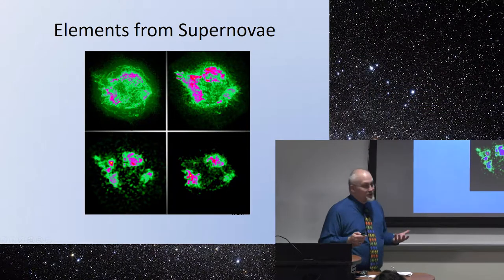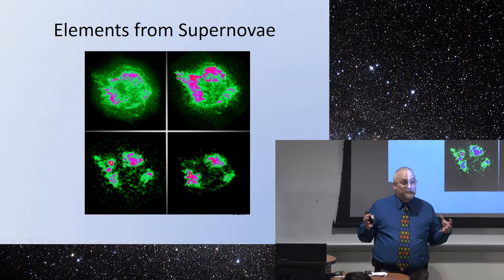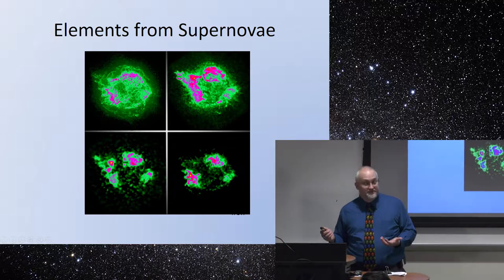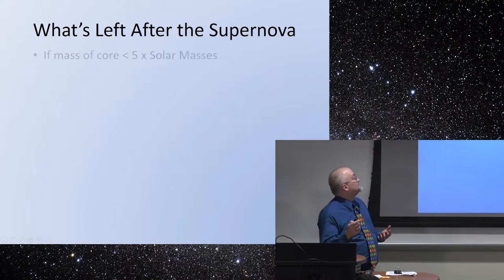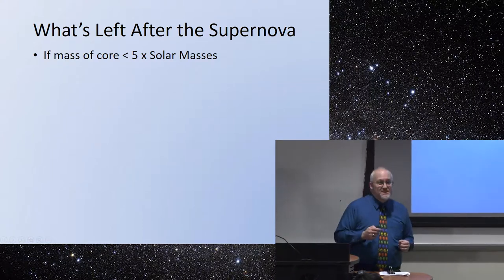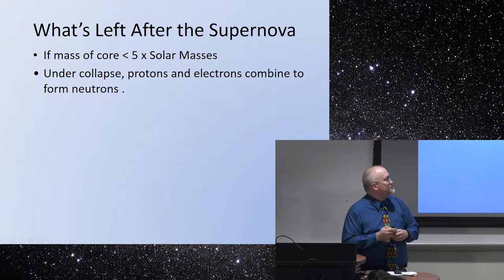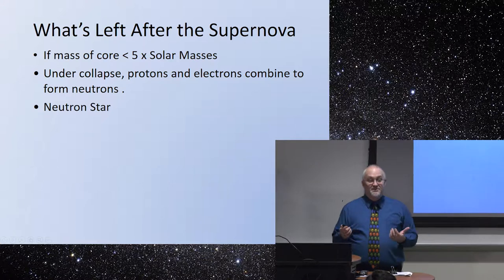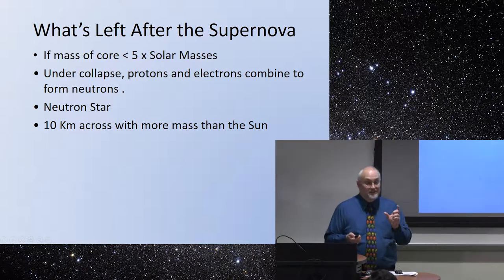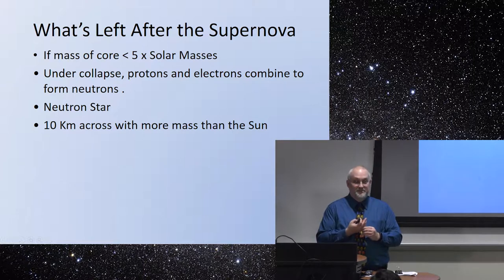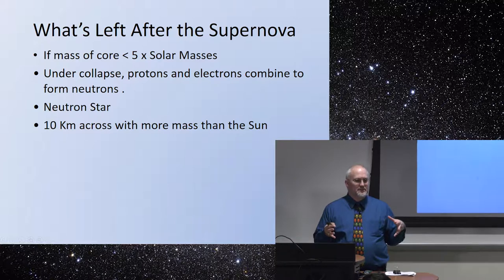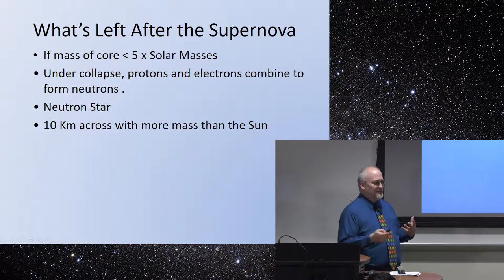Elements that come out of supernova explosions are the heavier elements — that explosive capacity provides the extra energy to create them, and we can get all the way up to uranium created in a supernova explosion. So what's left: if the mass of what's at the core is a little bit smaller than five times the mass of our sun, it will collapse down until electrons and protons are squished together to form neutrons, and we get a neutron star — something roughly ten kilometers across with roughly five times the mass of the sun. For reference, that might make it smaller than our town from end to end, but five times the mass of the sun. Way over a ton per teaspoon.